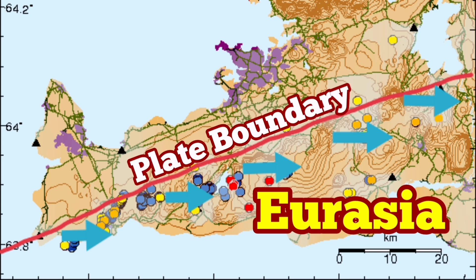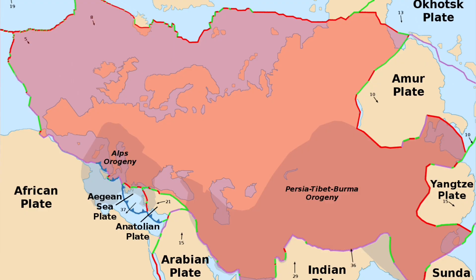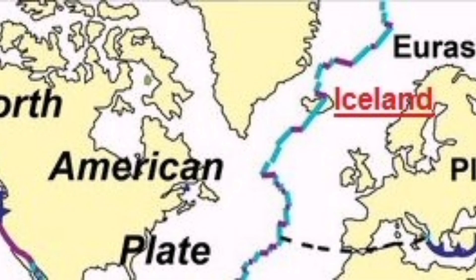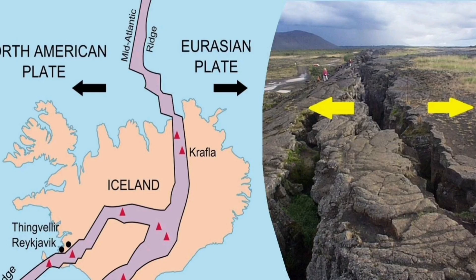Eurasia is one of the biggest plates on planet Earth, probably second only to the African plate. You can see that it has big subduction in the Yangtze plate, Amur plate, and the Pacific plate. So practically, the pulling due to slab weight and gravity is more than that of the North American plate.